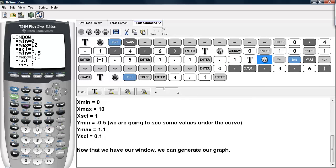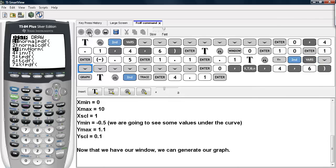Now that we have our window, we can generate our graph. We have y equals, go under second, VARS. And again, scroll until you find the fcdf command.